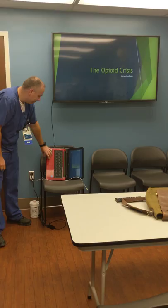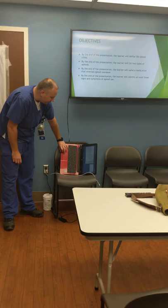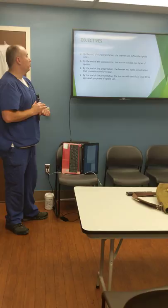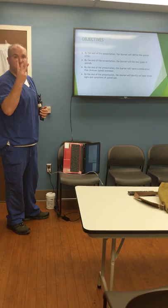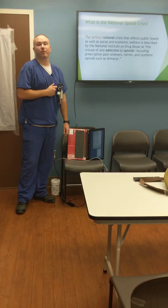I'm Jane Clarem and this is the presentation of the opioid crisis. These are the objectives. By the end of the presentation you're going to know how to define the opioid crisis, list two types of opioids, know how to reverse an opioid overdose, and identify at least three signs and symptoms of opioid use. The learner will also suggest one way they can help fight the opioid epidemic.